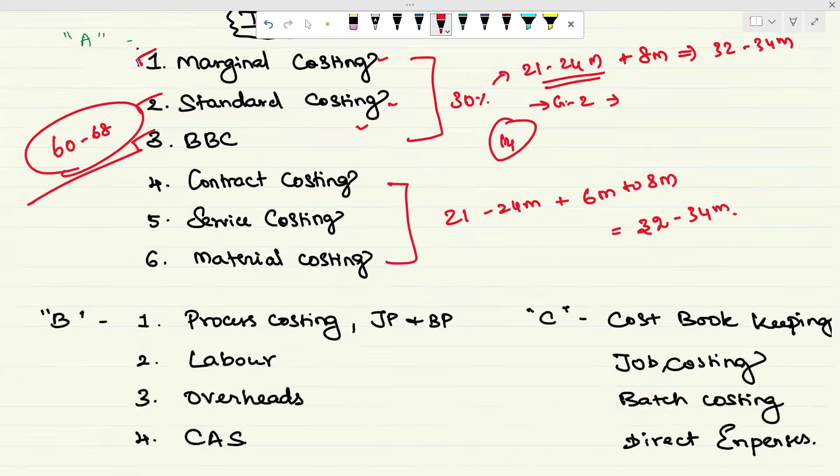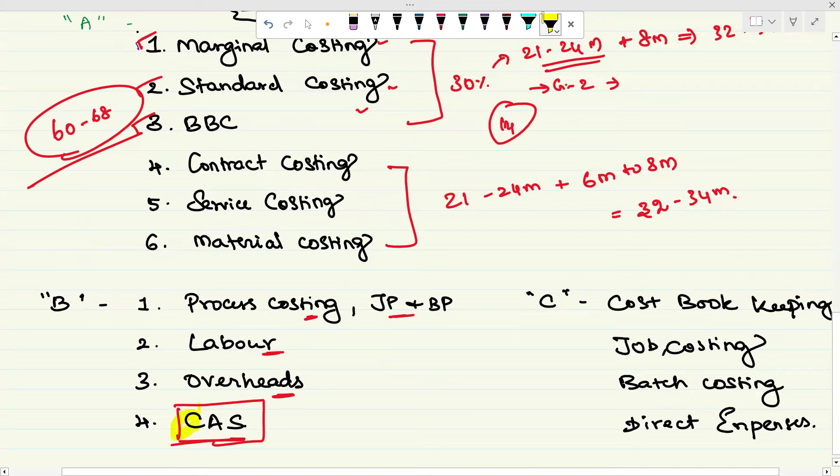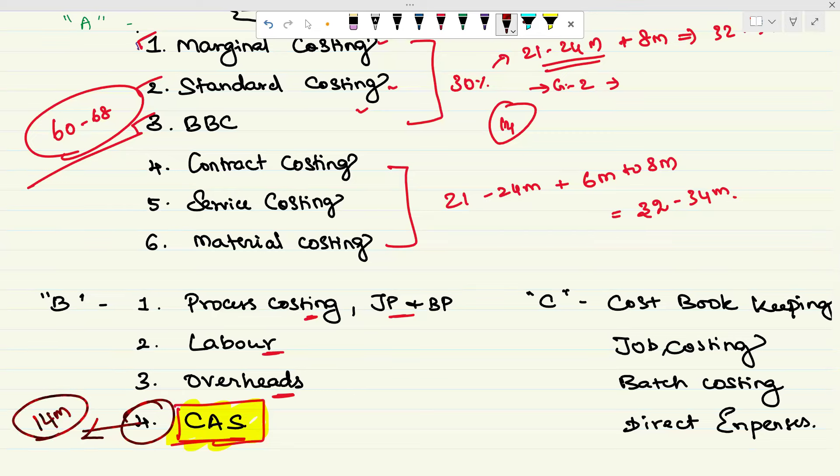Now come to your B category. Here I put process costing, joint product and byproduct, labor costing, overheads absorption costing, and cost accounting standards. Many students are not studying cost accounting standards, but it is equally important. You may expect 14 marks from this chapter alone. If you've done this, your next 30 plus marks is guaranteed.